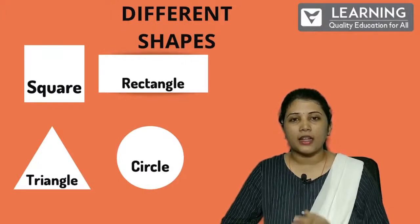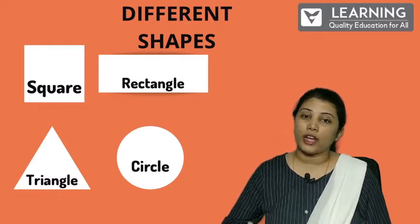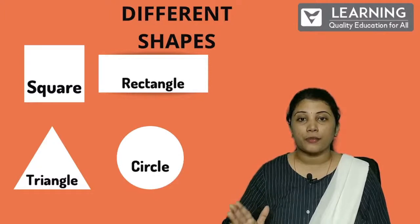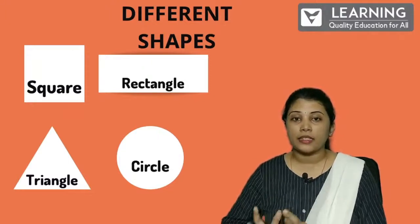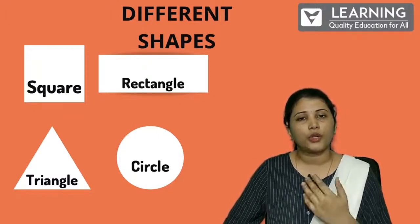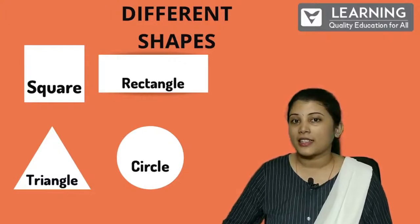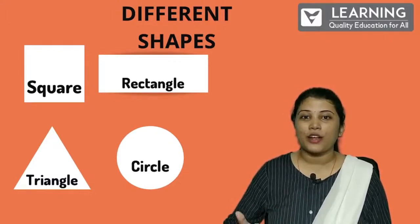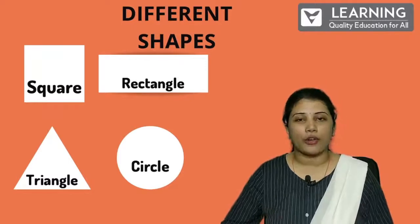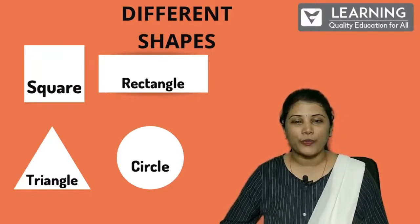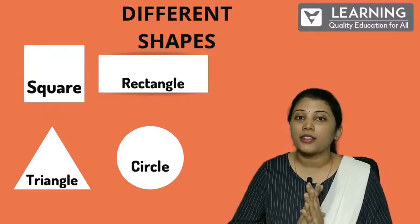These four shapes are the major shapes. Around you, you will find these kinds of shapes and objects. What do we have? We have square, rectangle, triangle, and circle. Come on, read it with me: square, rectangle, triangle, and circle.